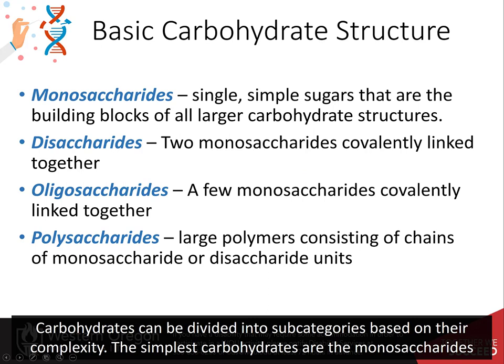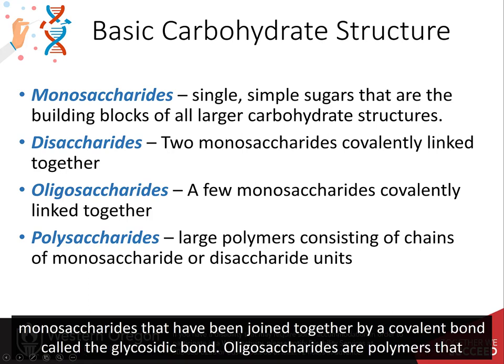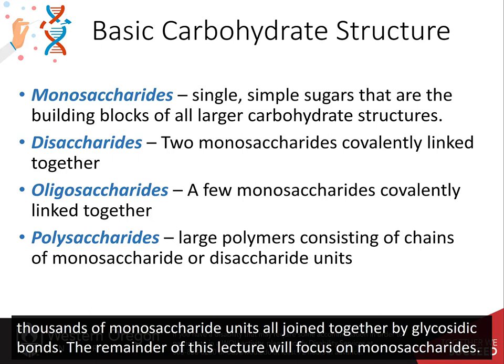Carbohydrates can be divided into subcategories based on their complexity. The simplest carbohydrates are the monosaccharides, which are the simple sugars required for the biosynthesis of all other carbohydrate types. Disaccharides consist of two monosaccharides joined together by a covalent bond called the glycosidic bond. Oligosaccharides are polymers consisting of a few monosaccharides covalently linked together. And polysaccharides are large polymers containing hundreds to thousands of monosaccharide units joined together by glycosidic bonds.